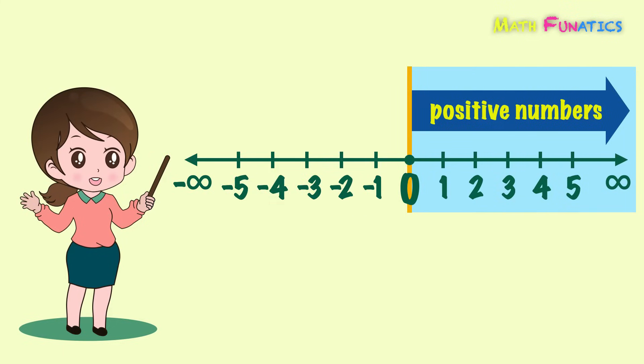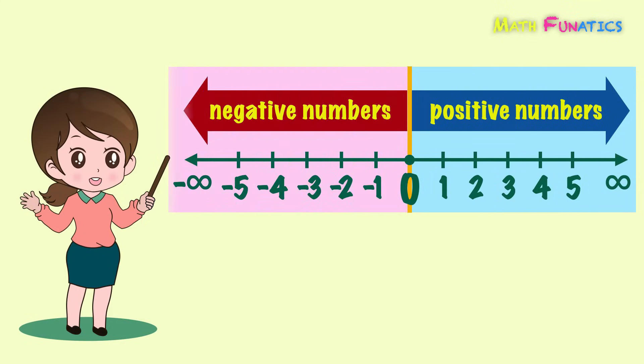Again, on the right are the positive numbers while on the left are the negative numbers. Zero, which is found in the middle, is the one that separates the two sets of numbers.